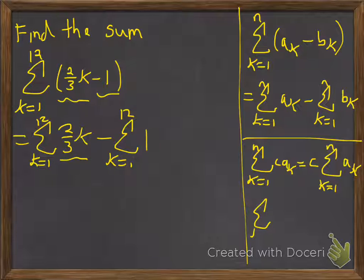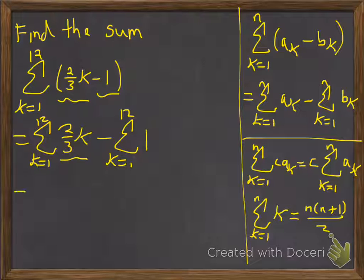The other property we're going to use here, we'll kind of use it for this one right here. And in this case it'll be just the k. And the other one we're going to use is k equals 1 to n of k, and that's going to be n(n+1)/2, and we proved that one by induction in class.